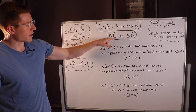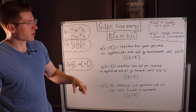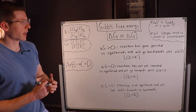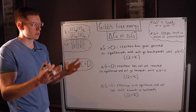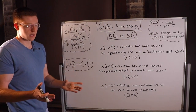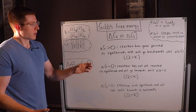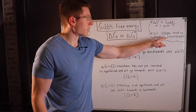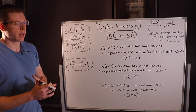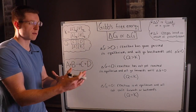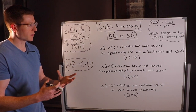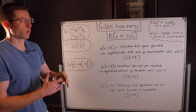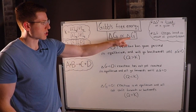Delta G without the degree symbol, on the other hand, is more flexible. It describes a reaction not necessarily at standard state and not necessarily at equilibrium. Delta G changes based on the amount of products and reactants, which implies that we can be shifted away from equilibrium. So this delta G is more flexible than delta G°.